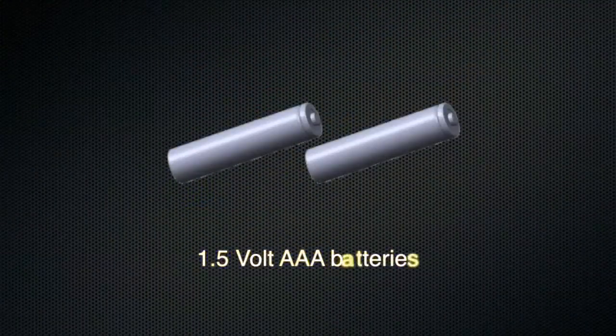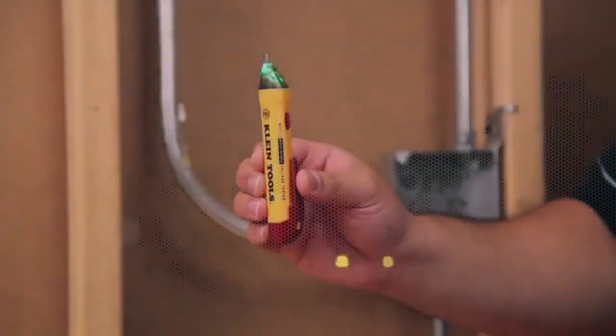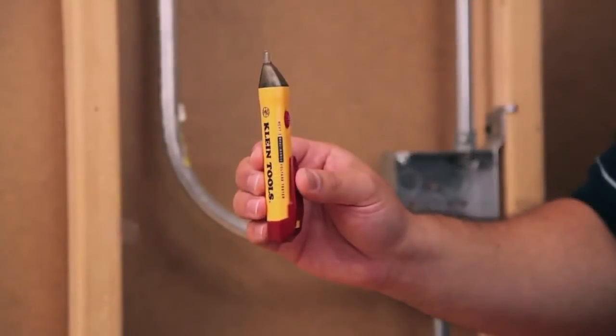The NCBT2 uses standard 1.5-volt AAA batteries and is equipped with an auto power-off feature to conserve battery life.